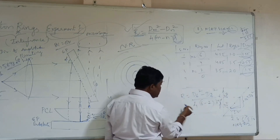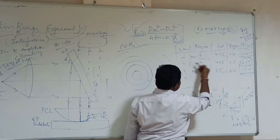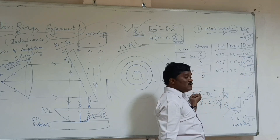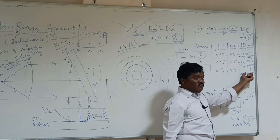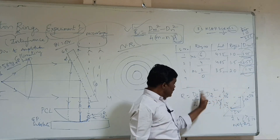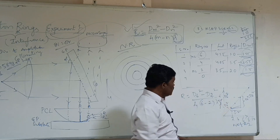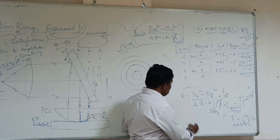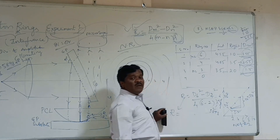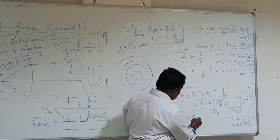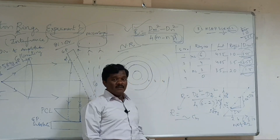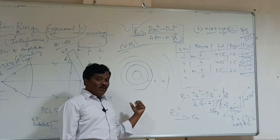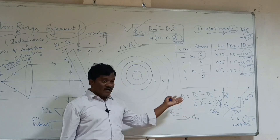From this graph, we get the values. D6 squared means diameter of 6 is 3.55, so square of that value. D2 squared means 1.5 squared, which is 2.25. Then divided by 4 into (6 minus 2) into lambda, which is 5.893. Finally, you get the radius of curvature of the plano-convex lens, which is in the order of a few centimeters, some tens of centimeters, or even up to 100 centimeters, depending on the type of plano-convex lens you are using.